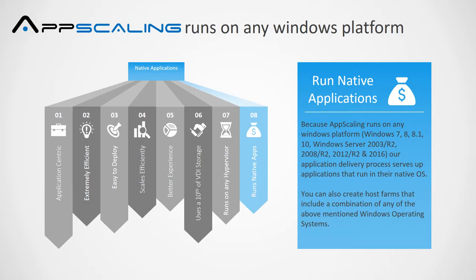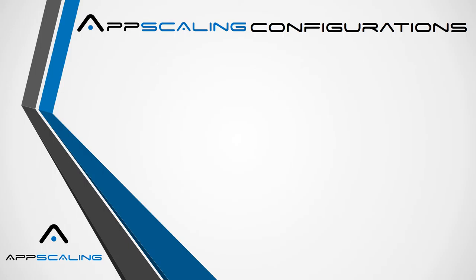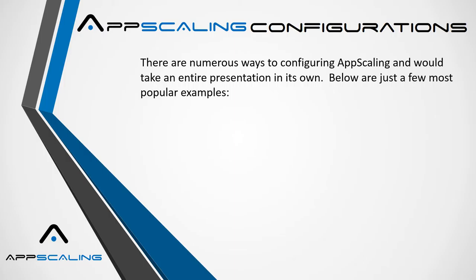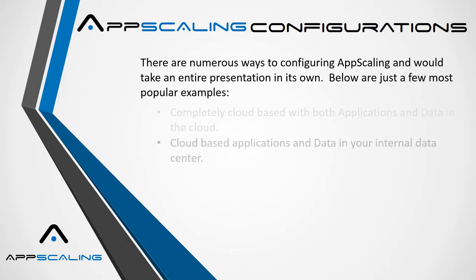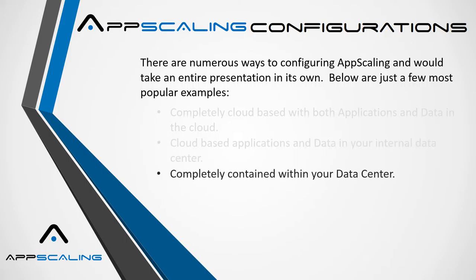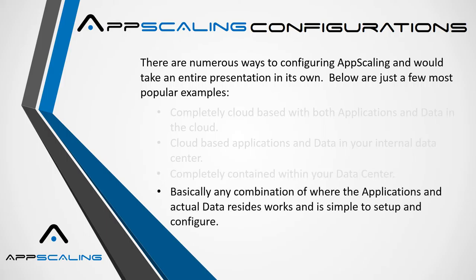You can also create host farms that include a combination of any of the above-mentioned Windows operating systems. App Scaling configurations: there are numerous ways to configure App Scaling — completely cloud-based with both applications and data in the cloud, cloud-based applications and data in your internal data center, or completely contained within your data center. Any combination of where the applications and actual data resides works, and it's simple to set up and configure.